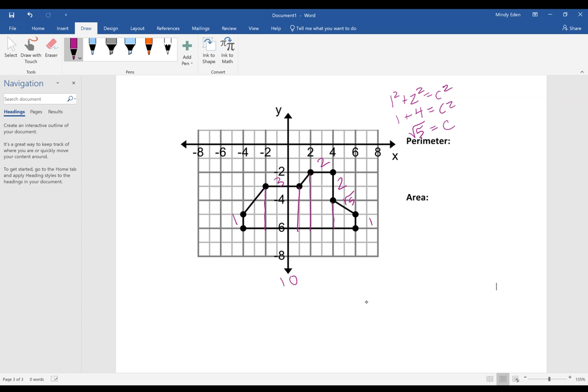Then I'm going to find this diagonal. So one and one. So one squared plus one squared equals C squared. So C squared equals two. So C equals root two.